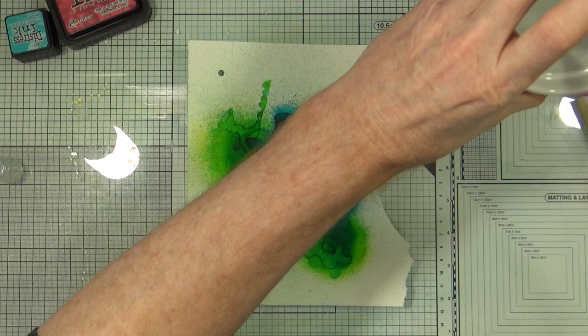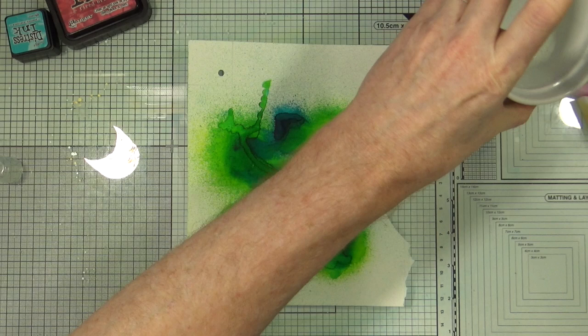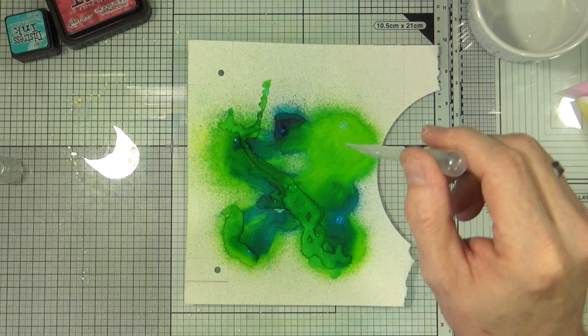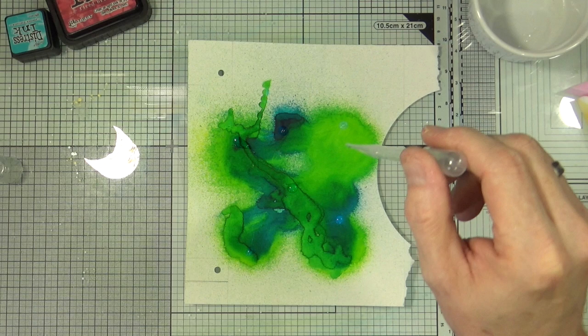So we're now left with this limey-greeny bluey kind of affair. Let's just take some more of that bleach and let's do the same thing again. Let's drop it around and let's just see what kind of patterns we get. Already I can see it has started to affect the blue.